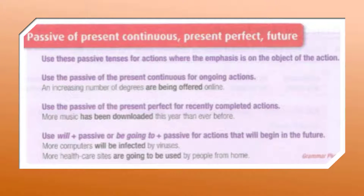Passive of Present Continuous, Present Perfect, and Future. Use these passive tenses for actions where the emphasis is on the object of the action.